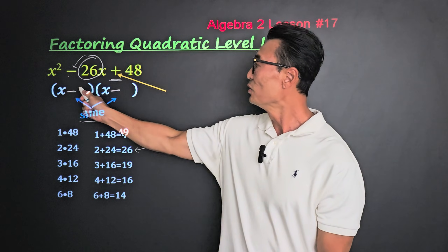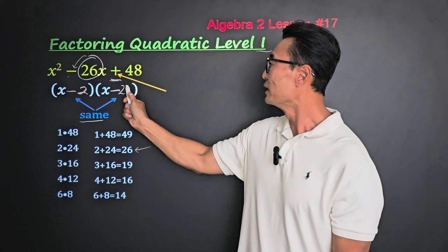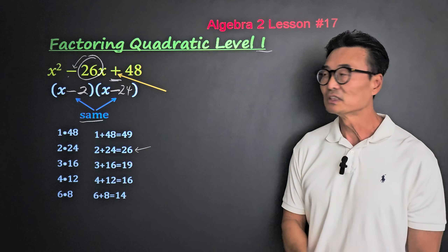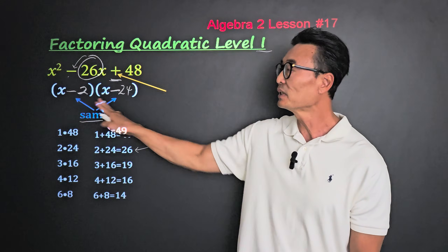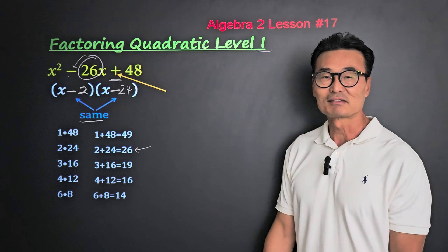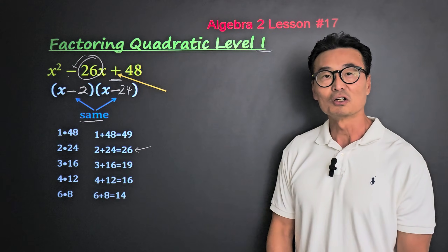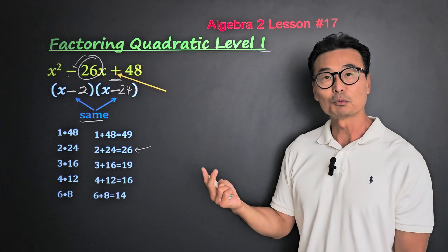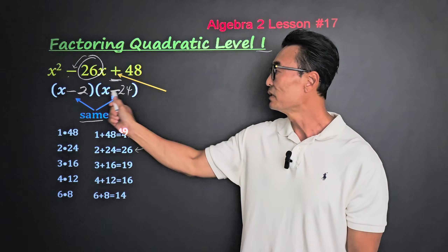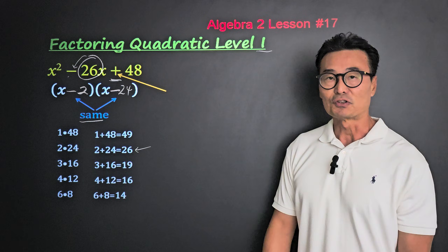Then we're going to put 2 and 24. The question is: is it okay to put 24 in the front and 2 in the back? Yes. When the signs are the same, the numbers are switchable — we could put 24 here and 2 here, or vice versa.